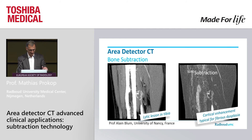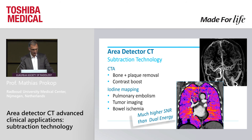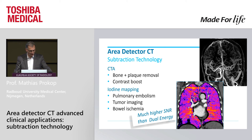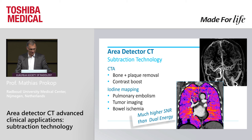Bone subtraction is very similar — you see cortical enhancement for fibrous dysplasia. To summarize, subtraction technically gives us excellent bone and plaque removal and a contrast boost for CTA, and iodine mapping for pulmonary embolism — a really big application — but we can do that also in the bowel. For tumor imaging everywhere we want to know whether there is enhancement in an organ, this technique is an excellent alternative to dual energy. Thank you for your attention.